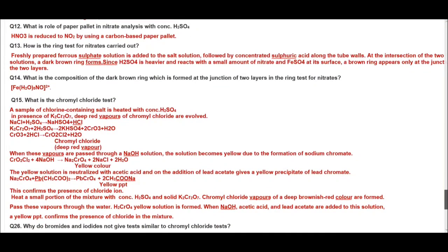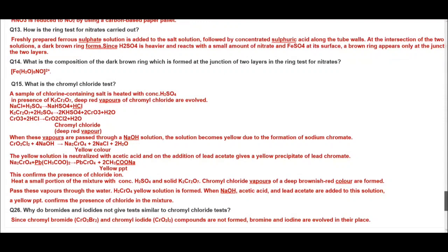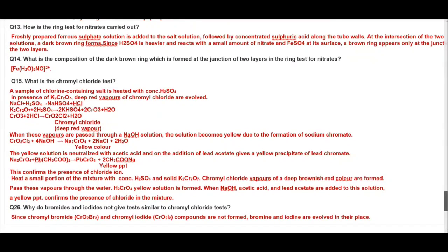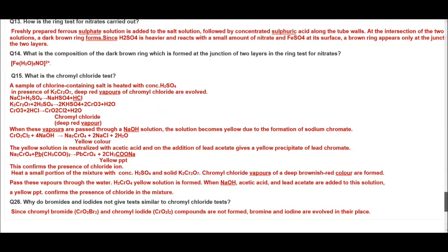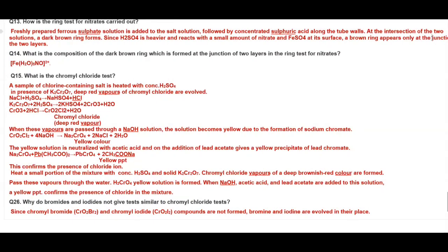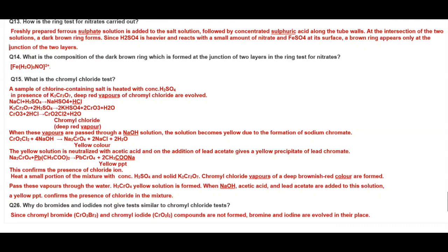What is the role of paper pellet in nitrate analysis with concentrated sulfuric acid? Nitric acid is reduced to NO2 more easily by using a carbon based paper pellet because carbon acts as a reducing agent, helps in conversion of nitric acid to NO2. How is the ring test for nitrates carried out? Freshly prepared ferrous sulfate is added followed by concentrated sulfuric acid along the walls and a dark brown ring is formed. And since sulfuric acid is heavier and reacts with a small amount of nitrate and ferrous sulfate at its surface, a brown ring appears only at the junction of the two layers. So why a brown ring is formed at the junction, this is the reason. What is the composition of the dark brown ring in the ring test for nitrates? This is the formula of the complex formed.